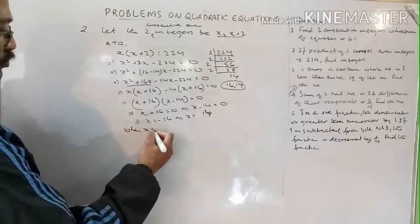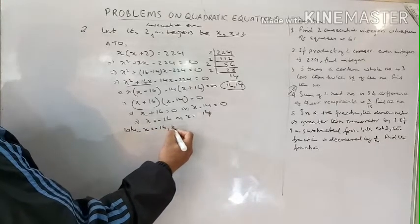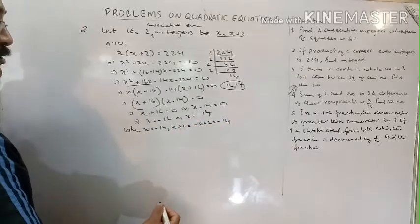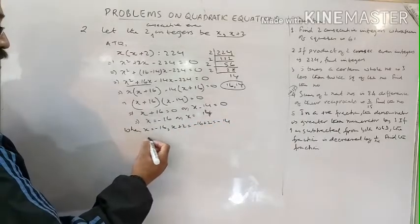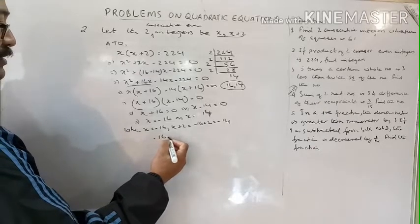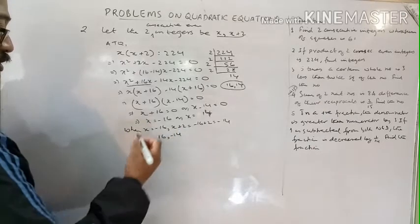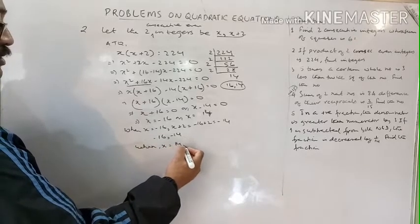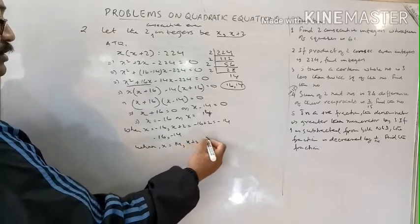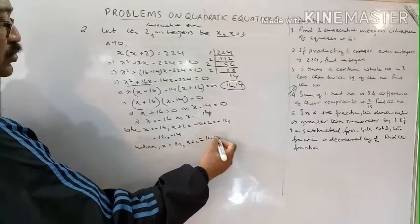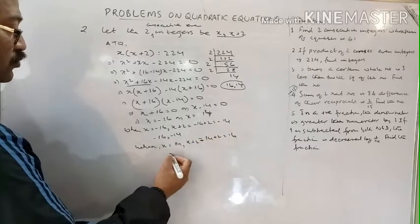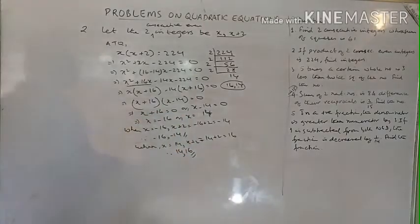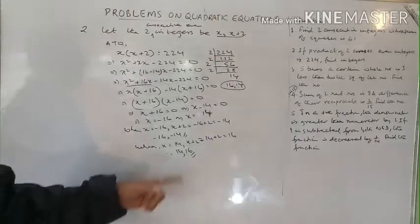When x equals minus 16, then x plus 2 equals minus 16 plus 2 equals minus 14. So the two numbers are minus 16 and minus 14. When x equals 14, then x plus 2 equals 16. So the two numbers are 14 and 16. The answers are either minus 16 and minus 14, or 14 and 16.